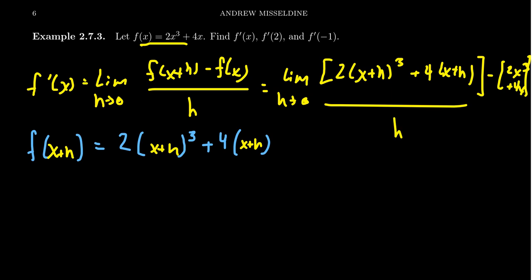So we need to simplify, multiply out the numerator. The hardest part here is going to come from multiplying out the (x+h)³.